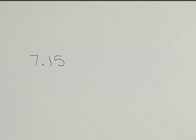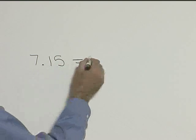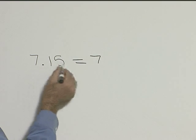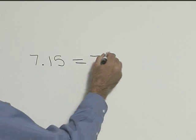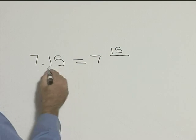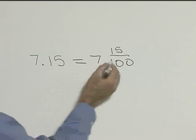In this problem, let's write 7.15 in fractional notation, and remember, let's reduce as much as possible. So this will be 7. We need to write .15, or 15 hundredths, as a fraction. That's the same as 15 over 100.